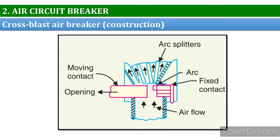When the moving contact is withdrawn, an arc is struck between the fixed and moving contacts. The high-pressure cross blast forces the arc into a chamber consisting of arc splitters and baffles. An important distinction is that the final gap for interruption is large enough to provide normal insulation clearance, so a series isolating switch is not necessary. However, the cross blast design is more complex compared to the axial blast air circuit breaker.